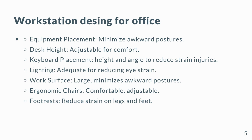Desk height: the height of the desk should be adjustable to accommodate different workers and allow for comfortable working positions. Keyboard placement: the keyboard should be positioned at a comfortable height and angle to reduce the risk of repetitive strain injuries such as carpal tunnel syndrome. Lighting: adequate lighting is essential for reducing eye strain and improving visibility. Work surface: the work surface should be large enough to accommodate all necessary equipment and documents, and should be positioned to minimize awkward postures. Ergonomic chairs: comfortable and adjustable chairs are essential for reducing fatigue and strain on the back and neck.